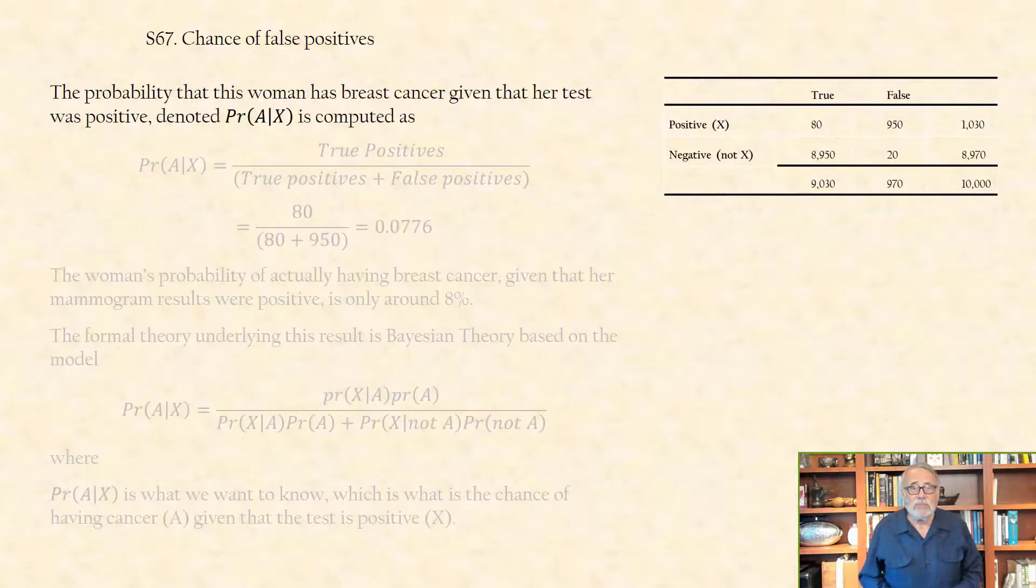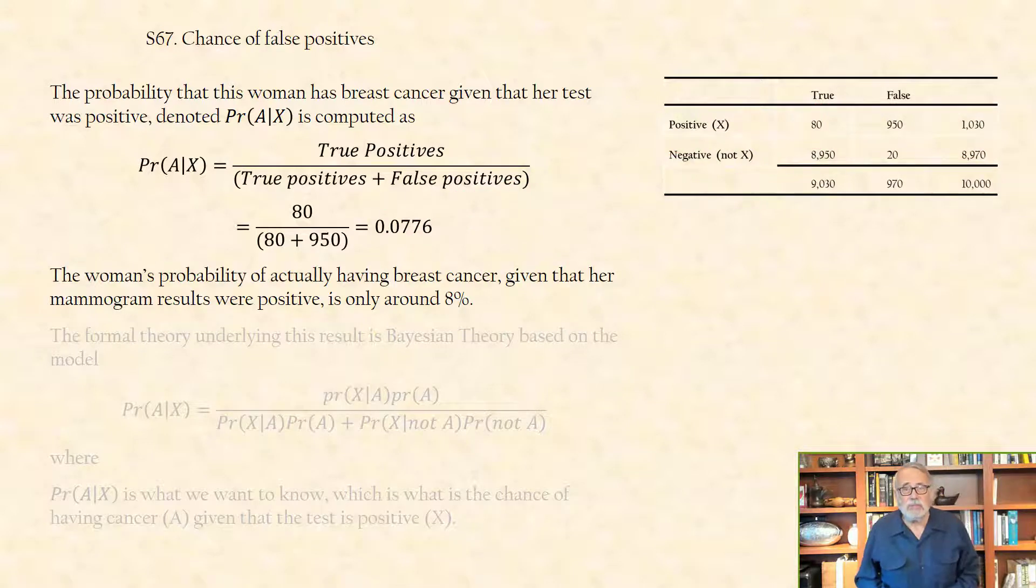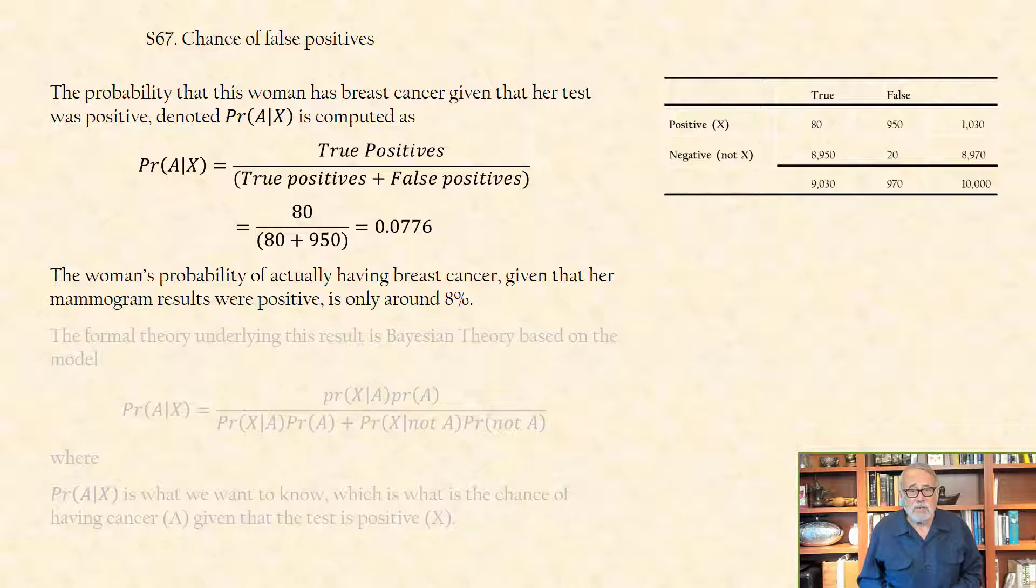The probability that this woman has breast cancer, given that her test was positive, is computed using this equation, given here, and when the numbers are plugged in, yields 0.0776. The woman's probability of actually having breast cancer, given that her mammogram results were positive, is only around 8%.